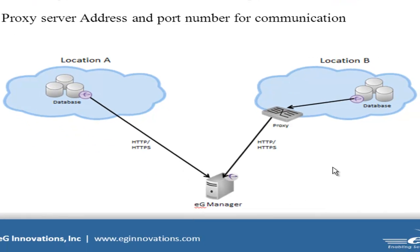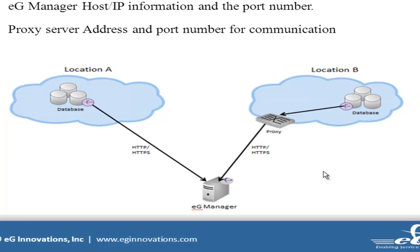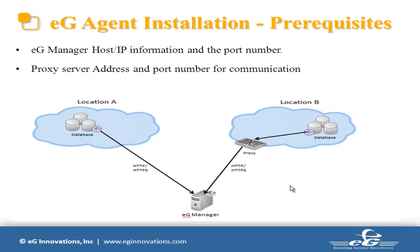As shown in the example picture, the server in location A communicates with the eG manager directly, but in location B the server uses a proxy for secure communication. In that case, we need the proxy server IP address and port number for eG manager and agent communication. If authentication is involved for the proxy, we also need the username and password.